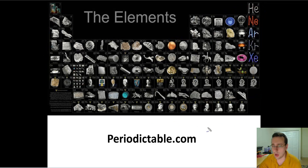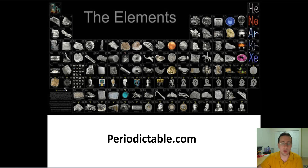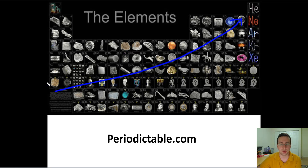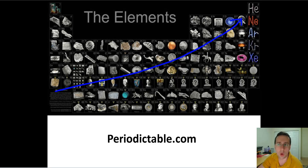We also talked about electronegativity, which has everything to do with how hungry you are for electrons. The elements on the right side are close to noble gases, so they're going to be hungry to take electrons. So electronegativity will tend to increase toward the top-right, especially among the smaller atoms, which are more desperate since they have fewer electrons — so for them, electrons mean a lot.